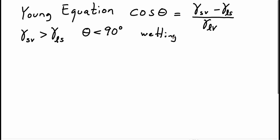On the other hand, if the solid vapor interface is less than the liquid solid interface, then the cosine of theta is a negative number, which means that theta is greater than 90 degrees, and we have at least partial non-wetting.